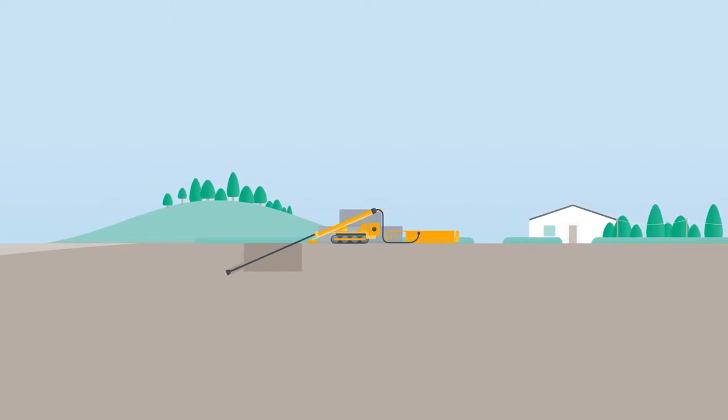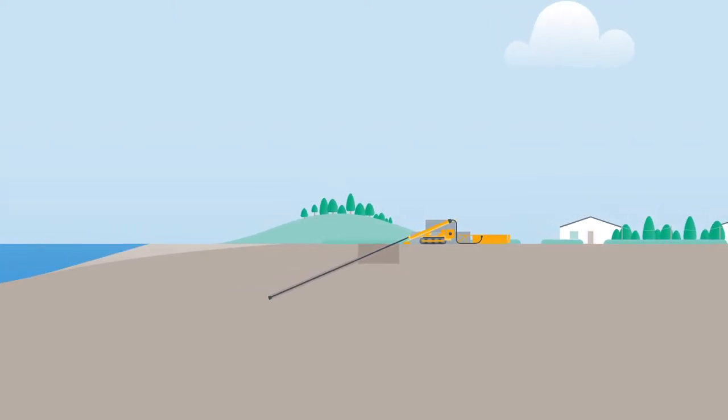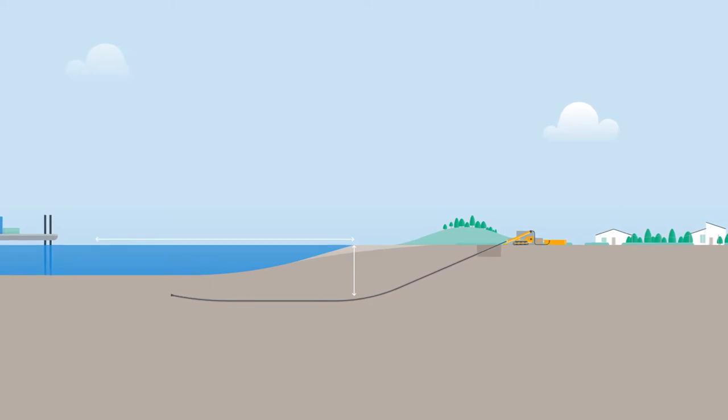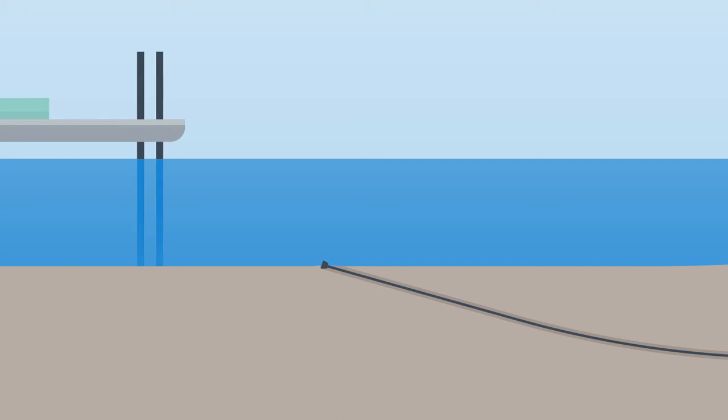To install the cable, first a bore hole is drilled under the beach. Drilling can be controlled precisely, keeping the bore path deep below the surface until the drill head emerges from the seabed well away from the beach area.